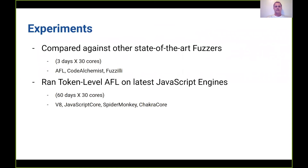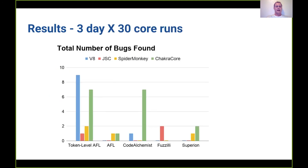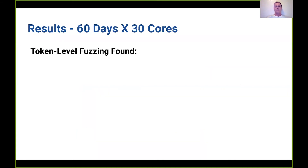For our experiments, we compared against other state-of-the-art fuzzers: AFL for byte-level fuzzing, and CodeAlchemist and Fuzzili for grammar-based fuzzing. We ran token-level AFL on the latest JavaScript engines for 60 days on 30 cores. For the comparison experiments, we ran for three days on 30 cores, repeated five times for each fuzzer and JavaScript engine combination. Token-level AFL found the most bugs of any tested fuzzer, and the bugs it found were largely not discovered by the other fuzzers — confirming that token-level AFL finds different bugs than grammar-based or byte-level fuzzers. We also ran a longer 60-day experiment on 30 cores to find as many bugs as possible.